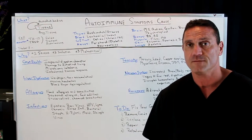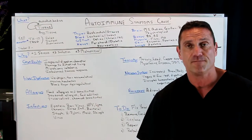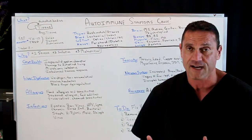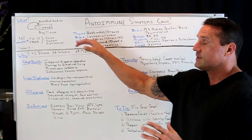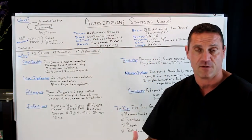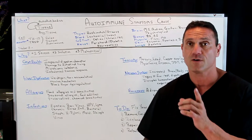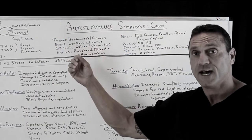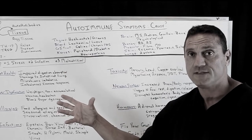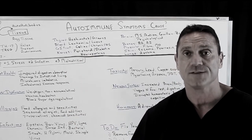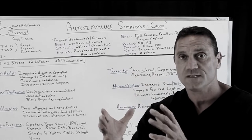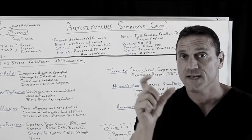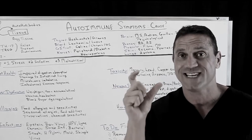So when it comes to autoimmune diseases, there are many of them and they're all specific to what tissue is being attacked. For example, autoimmune diseases per body part, per tissue: your thyroid — you could have Hashimoto's or Graves disease. Remember, an autoimmune disease is the immune system attacking the tissue. It's not the tissue's problem; you have an overactive immune system.